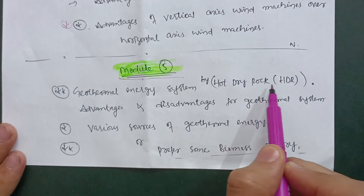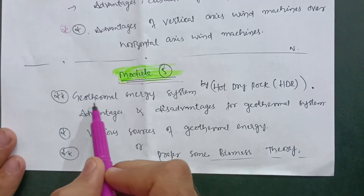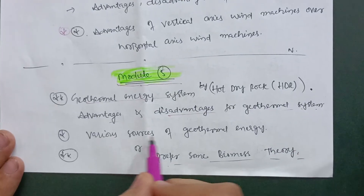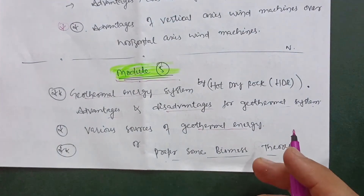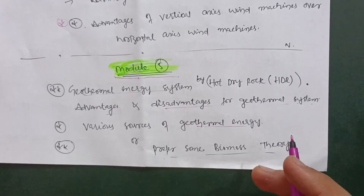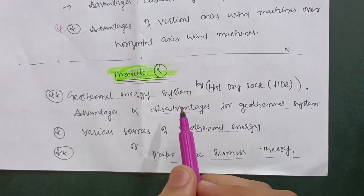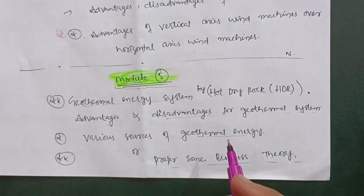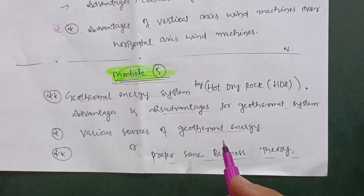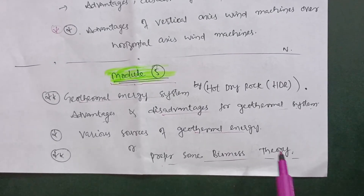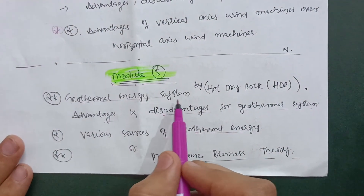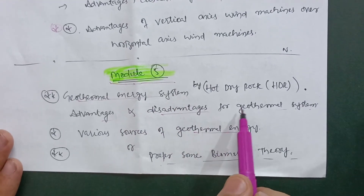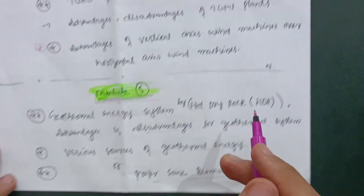In Module 5, explain the geothermal energy system by hot dry rock (HDR). You have to explain this geothermal energy system and its advantages and disadvantages. Various sources of geothermal energy are also important. Module 5 consists of three chapters, so go through the geothermal energy system part as it will be easy for you. You can also go through biomass theory in the alternate part — there are hydrogen concepts and biomass theory — but I prefer you focus on geothermal energy as it will definitely come.